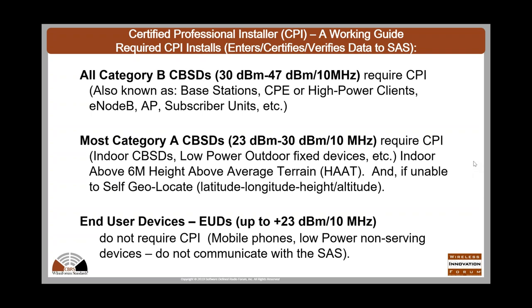The lower power category is Category A, between 23 dBm and 30 dBm per 10 MHz. In most cases this requires a CPI, but there are exceptions. If your device is indoors, lower than 6 meters in height above average terrain, and able to geolocate, it can be installed without a CPI. As of today, very few devices meet this indoor requirement because GPS does not accurately deal with altitude indoors, especially depending on building materials. So most indoor devices will also require a CPI.